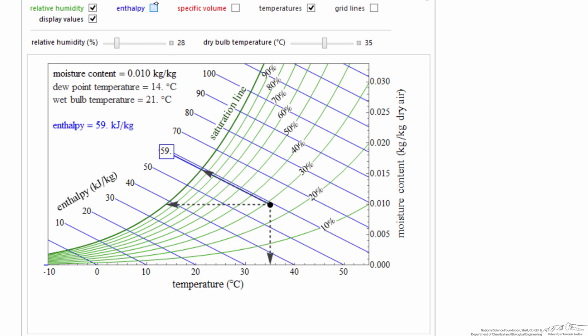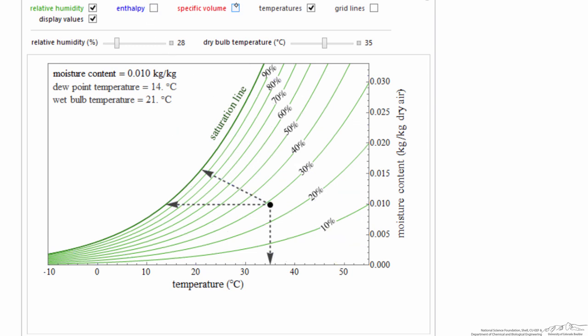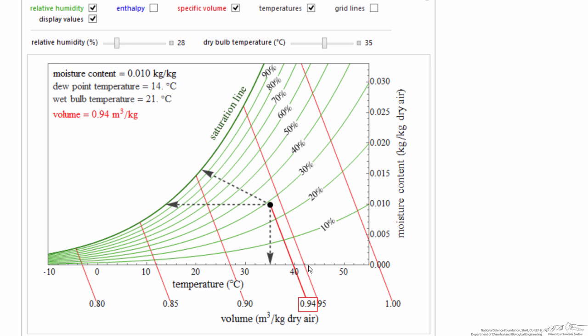Let's remove this so it's not too complicated, and let's look at specific volume. So for this point, specific volume, or humid volume, probably a better term, is the number of cubic meters per kilogram of dry air. So 0.94 cubic meters per kilogram of dry air.